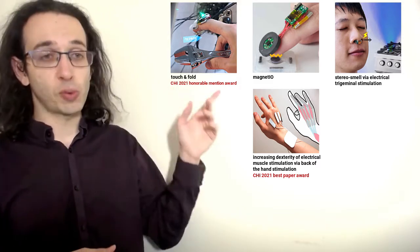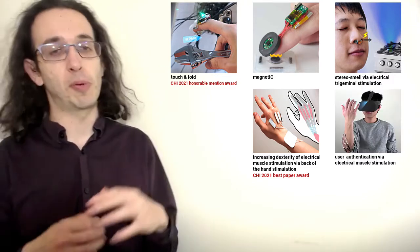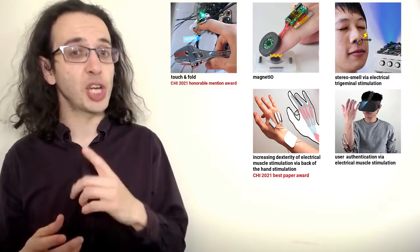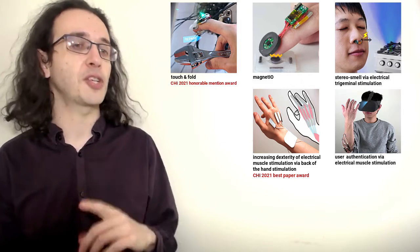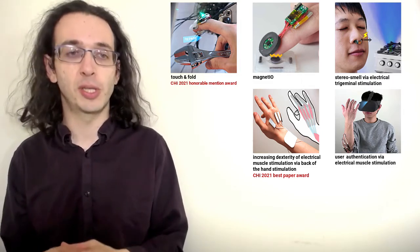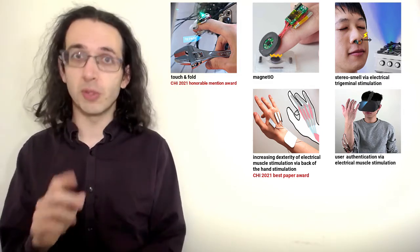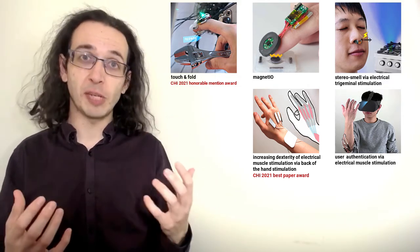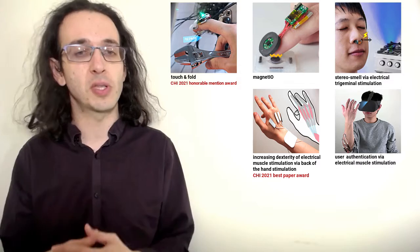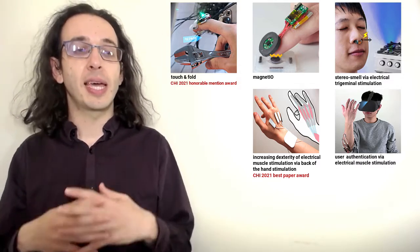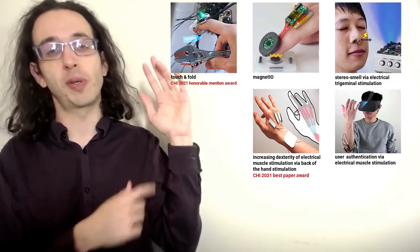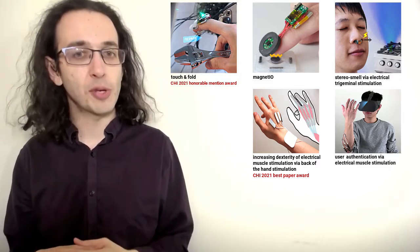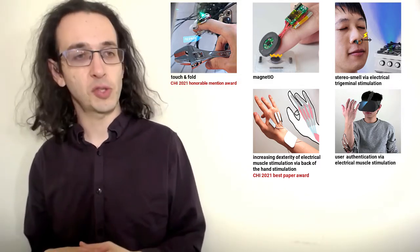The next three papers were done with our collaborators. The fifth paper is presented by Yuxin Chan and it's called User Authentication via Electrical Muscle Stimulation in which we demonstrate a novel use for electrical muscle stimulation not as the traditional haptic feedback that my group typically uses but as a means to authenticate the person who is wearing the electrodes. This was done in collaboration with the SAND lab at the University of Chicago.